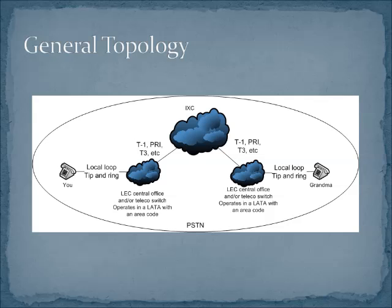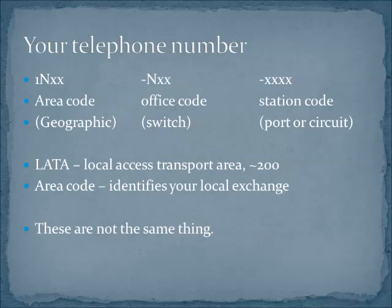If you were following along last time, we were talking about the general topology, some of the organizations, and phone numbers in the Public Switch Telephone Network. Today we're going to zoom in and focus a little bit on that local loop tip and ring pair. Remember that the local loop is just part of the larger architecture, and it feeds into the whole thing. Now as a reminder, the telephone number is highly geographic, and as we go over the local loop, we're looking at phone numbers that have a lot in common.